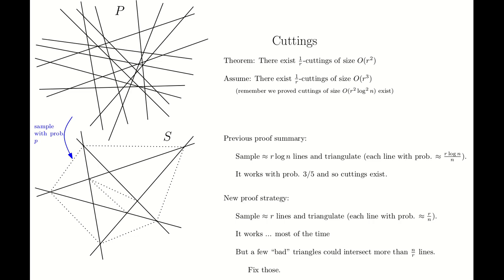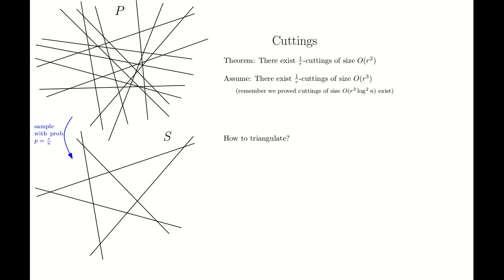To do that, first we need to start with a particular way of triangulating the arrangement. It turns out that for this more complicated proof, we cannot just continue with an arbitrary triangulation. The triangulation we like to use is called bottom vertex triangulation. Consider a cell in the arrangement that is not a triangle. We pick the lowest vertex — the vertex with the smallest y-coordinate — and connect it to all the vertices in the cell. For unbounded cells, we can use a bounding box method; we assume the shape is bounded inside a very big triangle, and thus we have no unbounded cell. For now, I will ignore the unbounded cells.